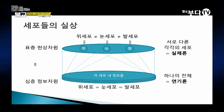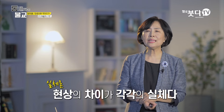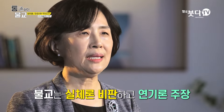이것을 도표로 표현해보면, 표층에서 보면 위세포도 있고 눈세포도 있고 발세포도 있고 각각 다른 세포다라고 생각하겠죠. 그렇지만 심층에서 보면 위세포 안에도 복제했을 때 하나의 인간으로 태어날 수 있게끔 그 모든 정보를 다 가지고 있기 때문에, 심층 정보 차원에서 보면 위세포나 눈세포나 발세포나 결국은 다 하나다. 현상의 차이를 각각의 실체라고 보는 것이 실체론이라면, 심층의 하나를 이야기하는 것, 전체를 말하는 것은 연기론이다라고 얘기할 수 있겠죠.